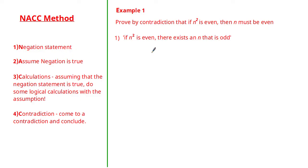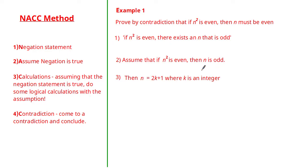We assume that if n squared is even then n is odd. For the calculations step, since we've assumed n is odd, n can be written as 2k + 1 where k is an integer. We can then write an expression for n squared: n² = (2k + 1)(2k + 1). Multiplying the brackets gives 4k² + 4k + 1.